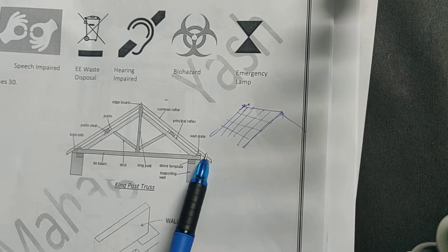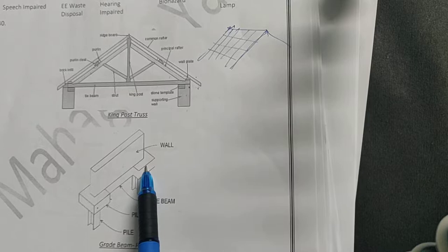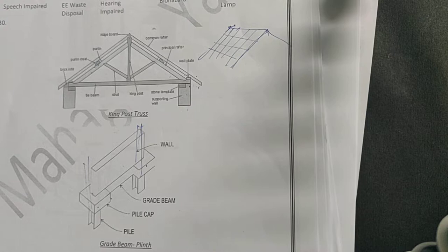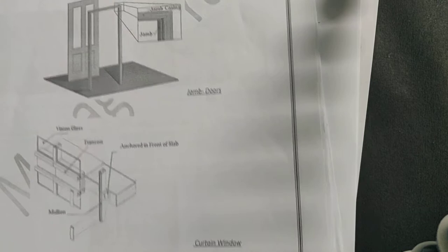Next is grade beam. A grade beam is a beam which runs below the wall at the plinth level. What happens is you have your two columns laid down and you have a wall. Where will this wall rest? This wall rests on a grade beam which runs through these columns on the plinth level. Here instead of a column, a pile is shown.